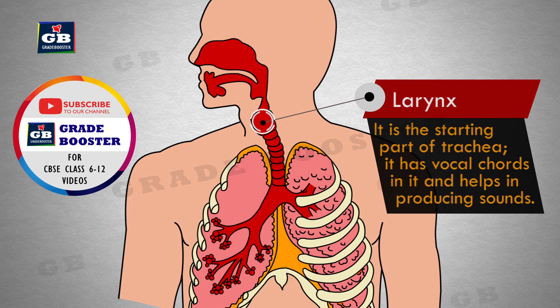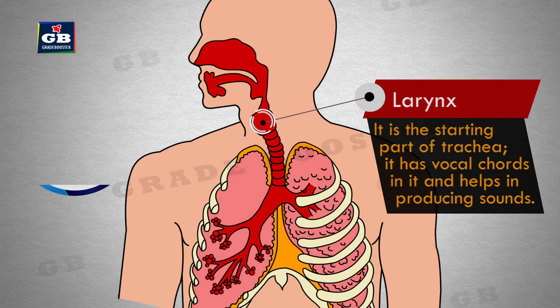Larynx: it is the starting part of the trachea. It has vocal cords in it and helps in producing sounds.